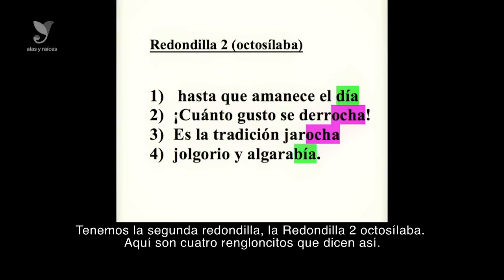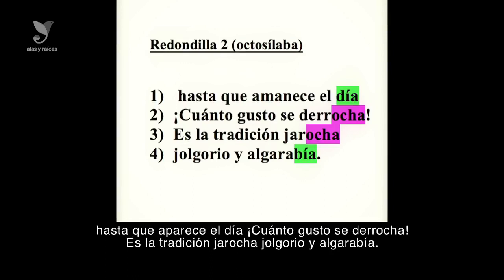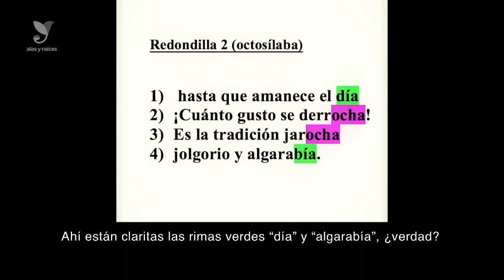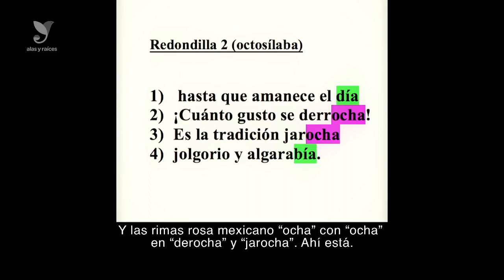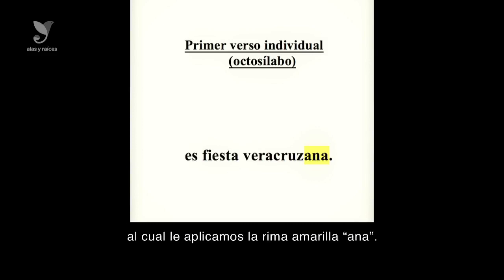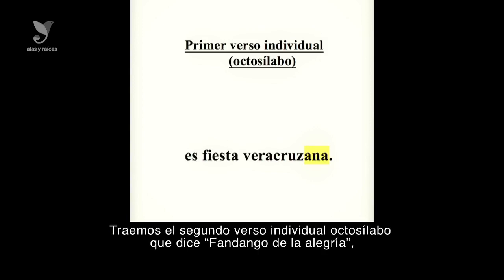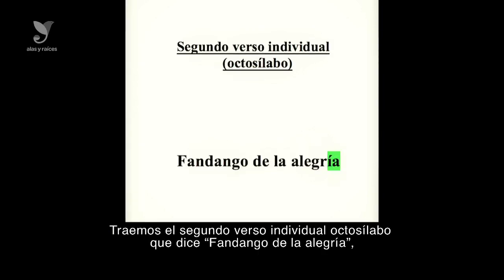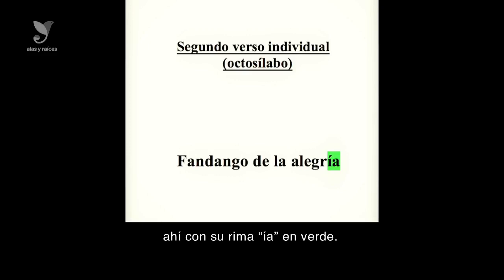Tenemos la segunda redondilla: cuatro renglones que dicen así: 'Hasta que amanece el día, cuánto gusto se derrocha, es la tradición jarocha, jolgorio y algarabía.' Ahí están claras las rimas verdes, día y algarabía, y las rimas rosa — ocha con ocha de derrocha y jarocha. Después el primer verso individual octosílabo: 'Es fiesta veracruzana', con rima amarilla ana. Y el segundo verso individual: 'Fandango de la alegría', con rima ia en verde.